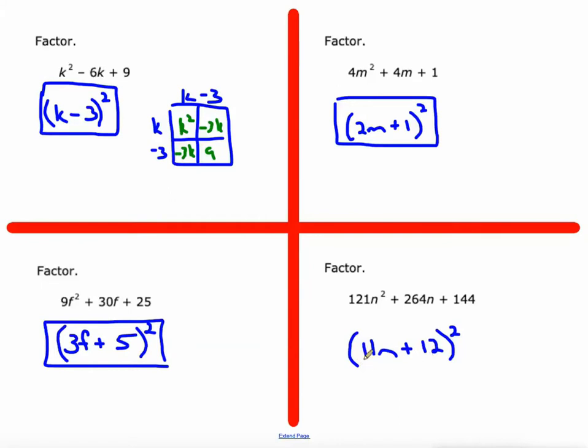If the product of these, 11 times 12, is 132, doubled equals this middle term. 132n doubled is 264n. So, there's the factorization.